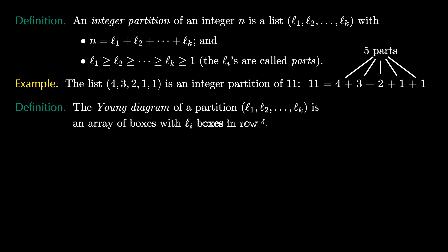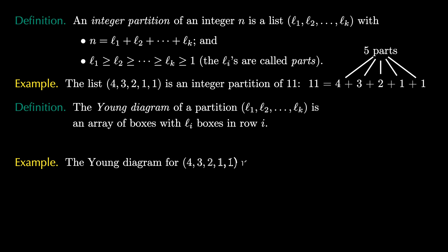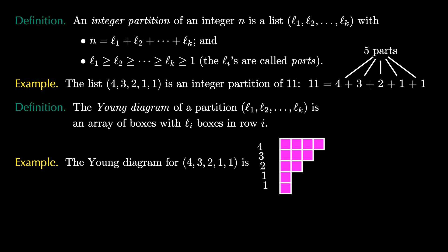The Young diagram of a partition is an array of boxes with li boxes in row i. For example, the Young diagram of the partition 4, 3, 2, 1, 1 is pictured here, because there are 4 boxes in the first row, then 3, then 2, then 1, and then 1.